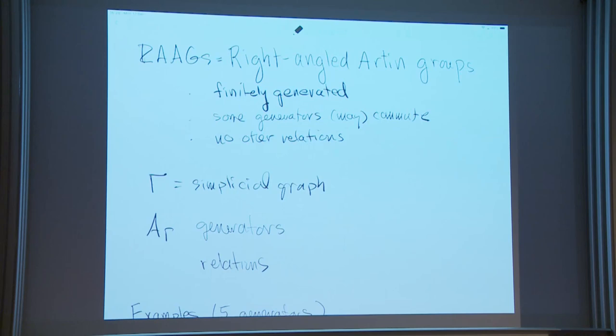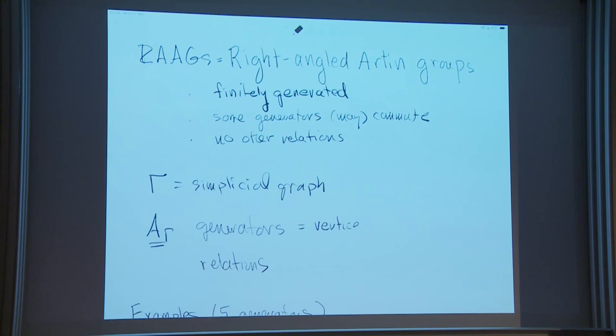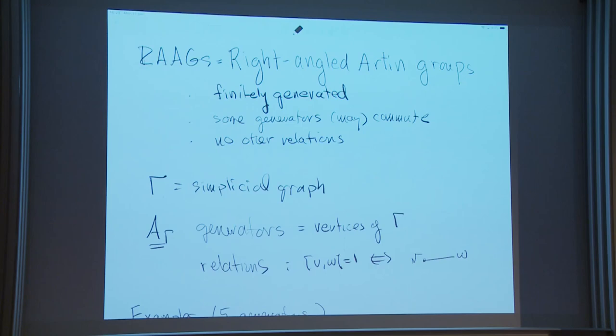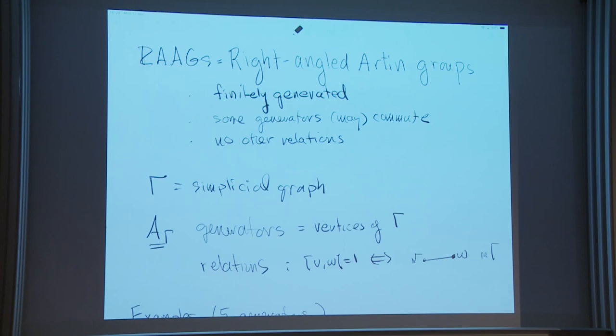If you have a simplicial graph, then the Artin group you get — this is the RAG — has generators equal to the vertices of gamma. The relations say that two generators commute if and only if there's an edge between those two vertices of the graph. So by just drawing a simple graph, you can describe exactly what your group is.